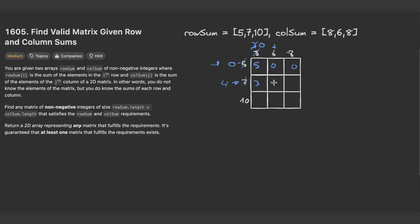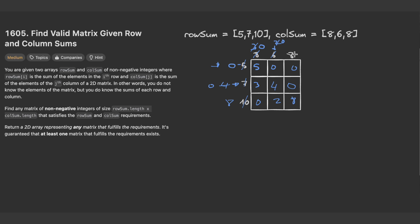At position (1,1), the minimum of six and four is four, so I place four and subtract: that column sum becomes zero and the row sum becomes two. At (1,2), the minimum of eight and zero is zero — nothing to subtract. Moving to the third row: at (2,0) the minimum of ten and zero is zero. At (2,1), the minimum of ten and two is two, so I place two and subtract: that column sum becomes zero and the row sum becomes eight. Finally at (2,2), the minimum of eight and eight is eight — I place eight and subtract from both.